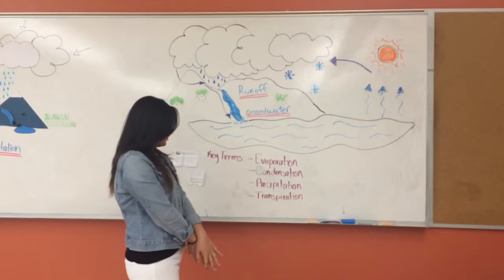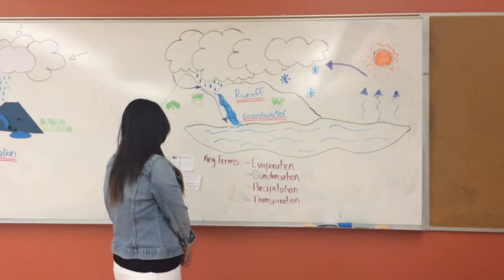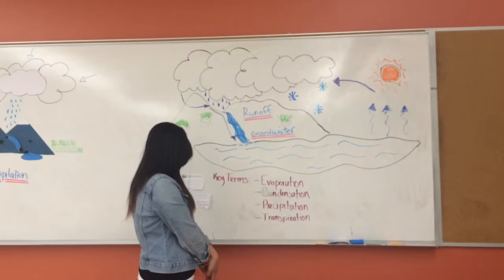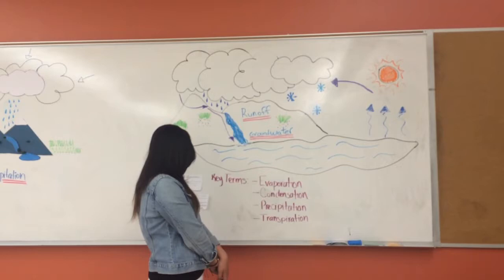We have precipitation, which means water falls from the sky in the form of rain, snow, hail, or sleet — this process is called precipitation. Then, for the last one, we have transpiration, which is a process similar to sweating. Plants lose water which is absorbed into the atmosphere, much like evaporation. The combination of evaporation and transpiration is known as evapotranspiration.